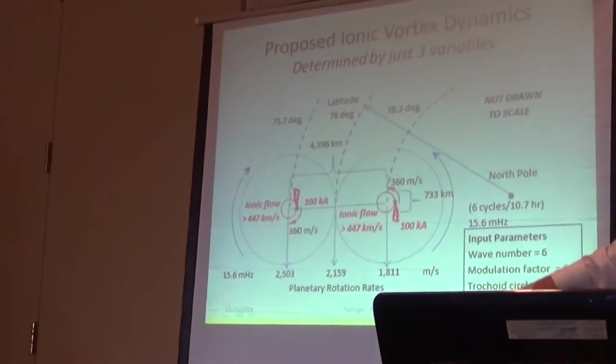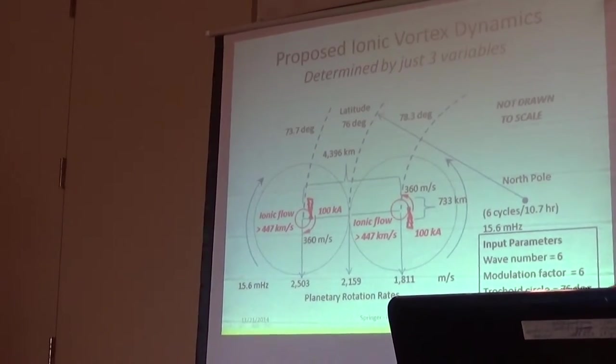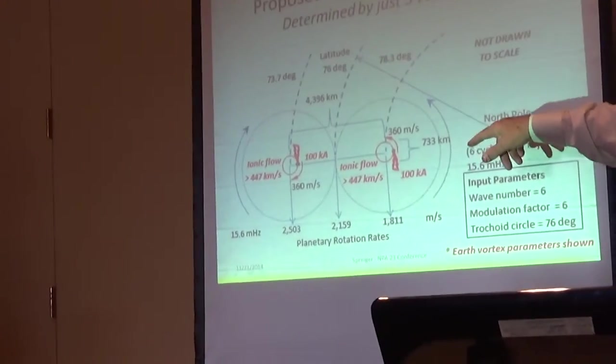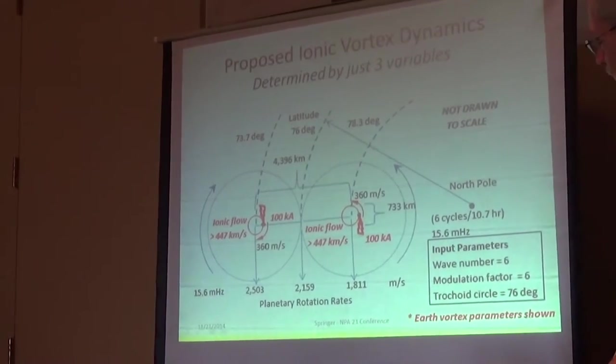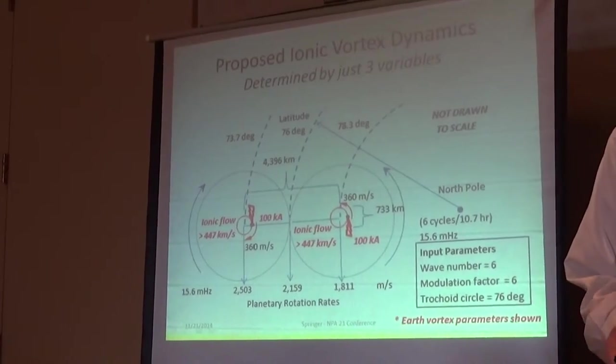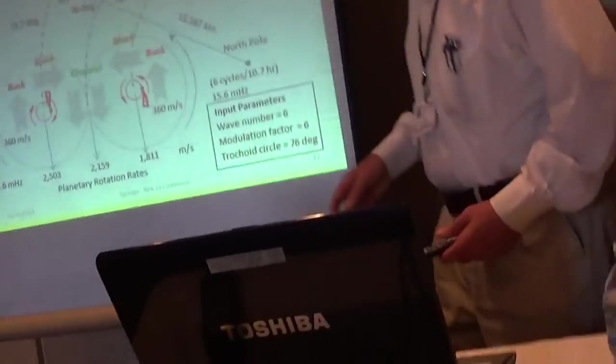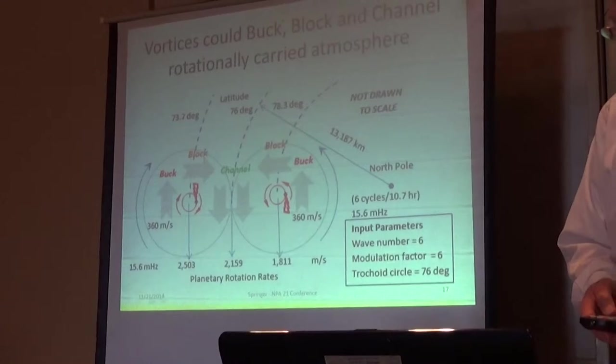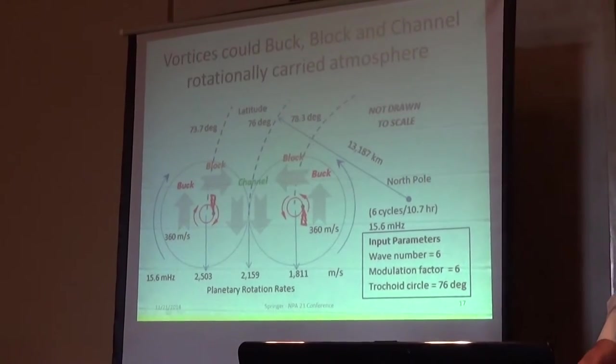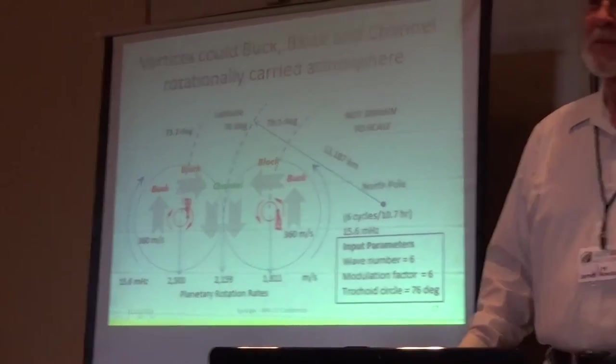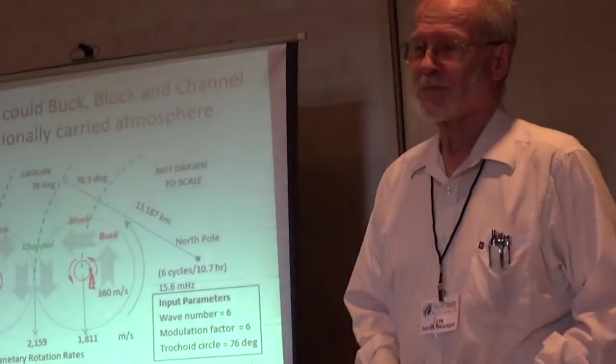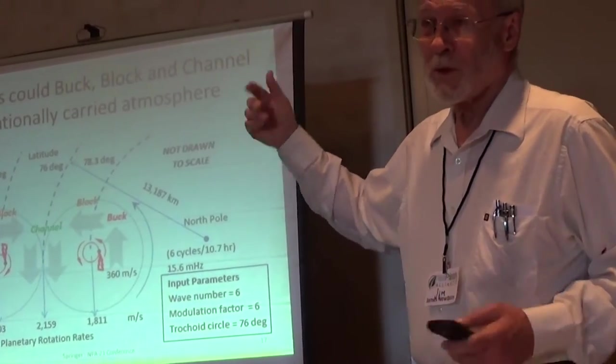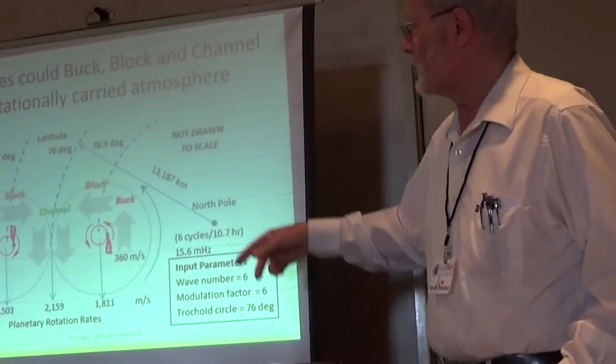So if you take the two vortices together, you can get currents. And you can have situations where they're bucking, locking, and he thinks that the two working together give the hexagon. That's the conjecture. So what's missing, and what he needs to work on, or maybe you can all help him, is to find the connection between electrical currents that we have not measured and creating these vortices.